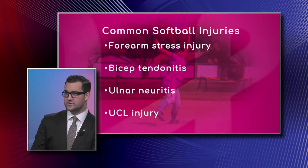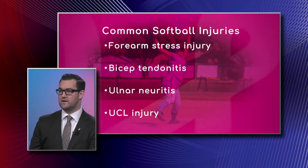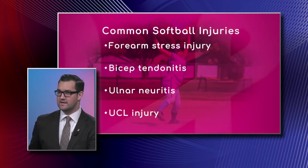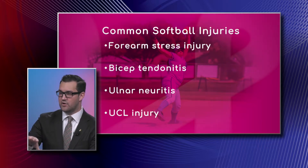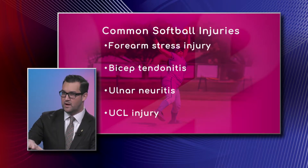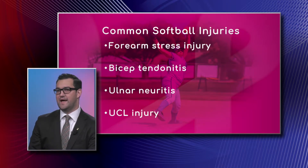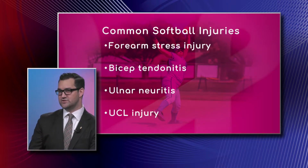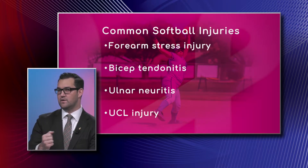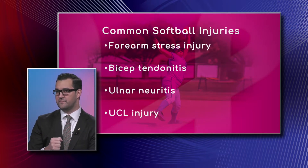The forearm stress injury — to throw a fastball or curveball with that underhand motion, it requires the arm to flip over and pronate a bit, so kind of flip the arm where your palm is down, and that puts increased stress on the ulna, one of the bones in the forearm.